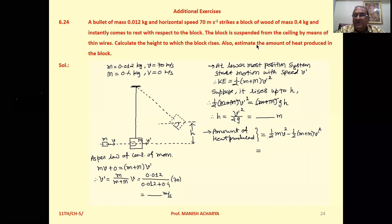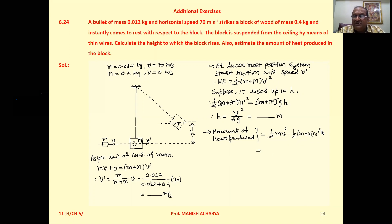Next, calculate the amount of heat produced in the block. The amount of heat produced equals the change in kinetic energy. The initial total kinetic energy of the system is half m v squared, and the final kinetic energy is half (m + M) v dash squared. The difference between these two gives the heat produced. Substitute m as 0.012, v as 70, and (0.012 + 0.4) into v dash in this equation, then solve to get the amount of heat produced.